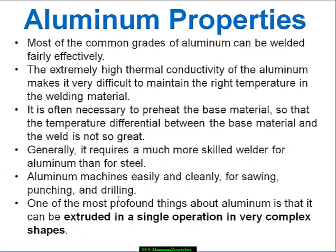Most common grades of aluminum can be welded fairly effectively. However, the extremely high thermal conductivity of aluminum makes it very difficult to maintain the right temperature in the welding process. It is often necessary to preheat the base material so that the temperature differential between the base material and the weld is not too great. This makes a much more effective weld and also reduces differential stresses in the cooling process.